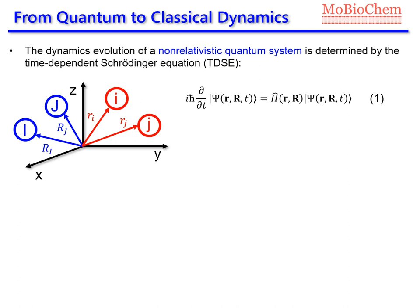Let's assume we have the following system: a molecule formed by two nuclei, capital I and capital J, whose coordinates are represented by capital R letters. We also have two electrons, small i and small j, whose coordinates are small ri and small rj. If we want to know the time evolution of a non-relativistic quantum mechanical system, we need to solve the time-dependent Schrödinger equation.